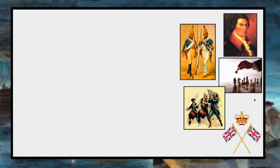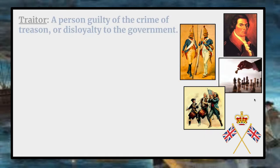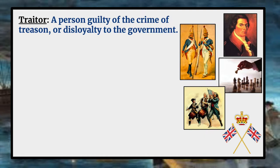As always, we review vocabulary before the actual lesson, and I will remind you that this should already be in the front of your interactive notebooks — you do not need to write this down. Our first term is traitor. A traitor is a person guilty of the crime of treason or disloyalty to the government. The king considered the people leading the rebellion in the 13 colonies to be traitors.